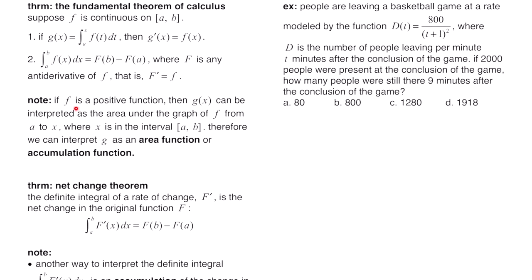If f is a positive function, then g of x can be interpreted as the area under the graph of f from a to x, where x is in the closed interval from a to b. Therefore we can interpret g as an area function or an accumulation function.